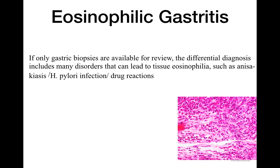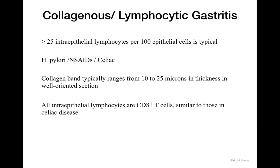In eosinophilic gastritis there is an increased number of eosinophils within the tissue, with possible presence of eosinophilic micro-abscesses where eosinophils fill the crypt lumen. This can be seen as a component of an allergic reaction or in cases of parasitic infestation. Regarding collagenous or lymphocytic gastritis: if you have more than 25 intraepithelial lymphocytes per 100 epithelial cells — normally we hardly see any lymphocytes within the foveolar epithelium — that is called lymphocytic gastritis, usually associated with H. pylori, celiac disease, and sometimes Crohn's disease. The collagenous band is 10 to 25 microns, and most of these intraepithelial cells are CD3-positive, CD8-positive T cells.